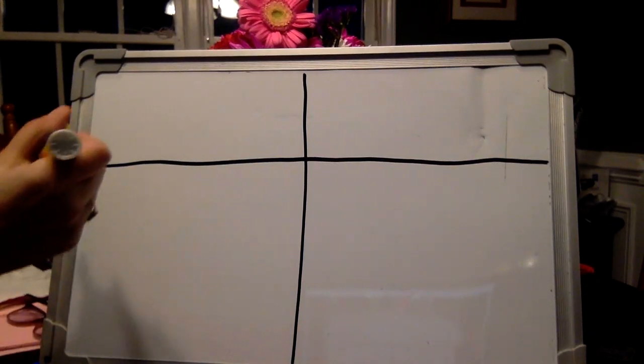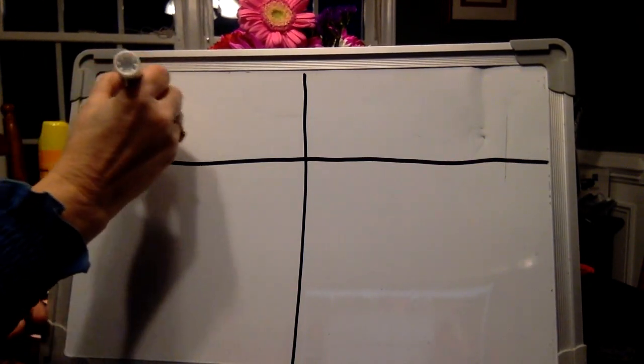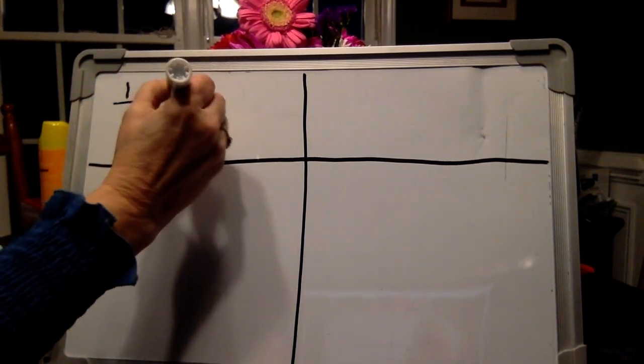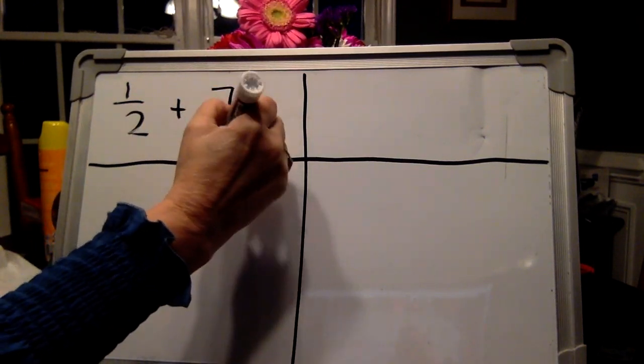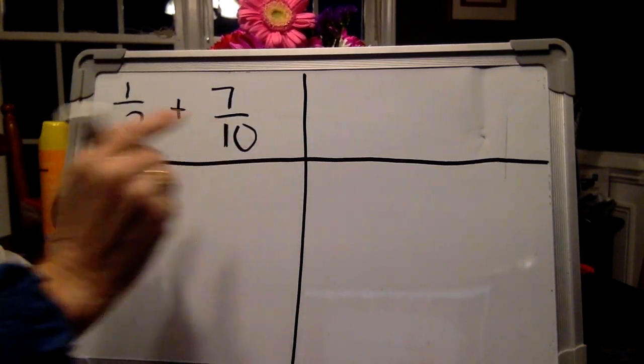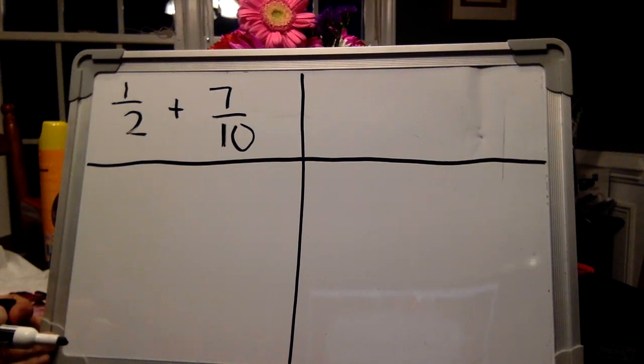All right, we're going to start with our first one, which is one-half plus seven-tenths. Remember, the first square is you write the problem. Do you remember what the second square is for?